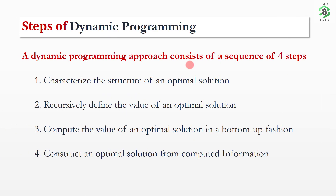First of all, in this session we will check what are the steps or basic characteristics of dynamic programming. In dynamic programming, first of all, we need to find out a structure to solve the problem optimally — that is, we need to find out a structure of the optimal solution. Dynamic programming is a type of algorithm where we solve optimization problems.